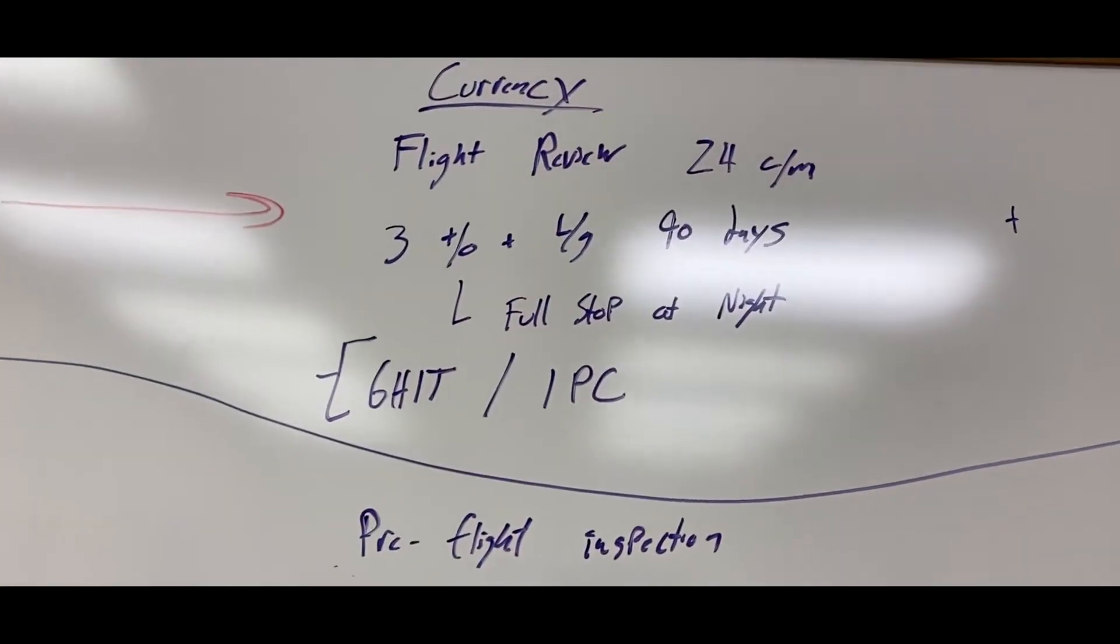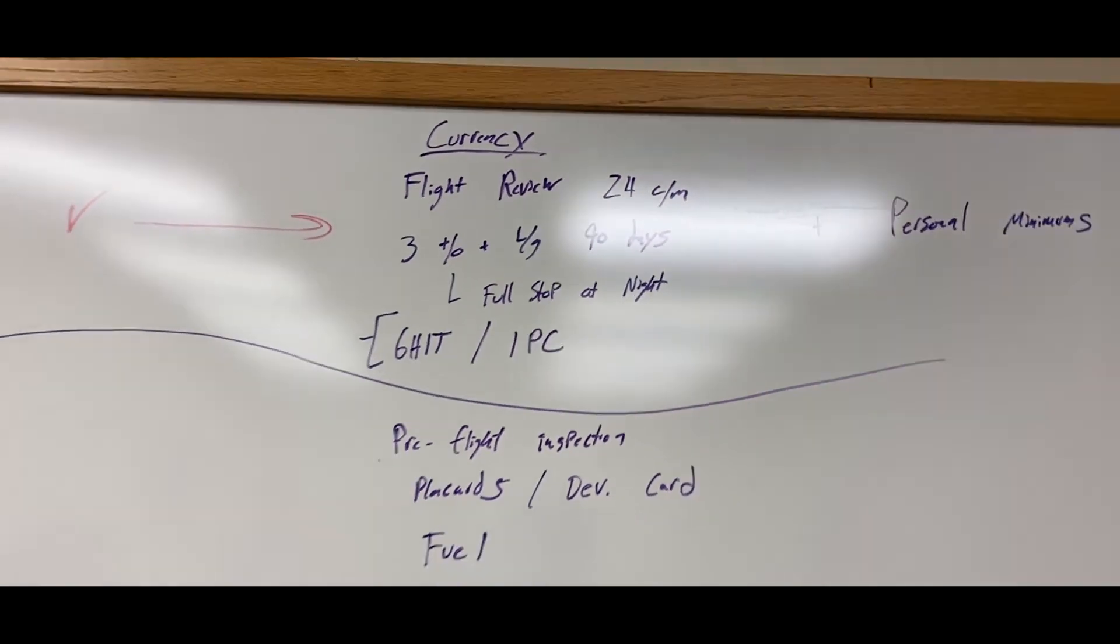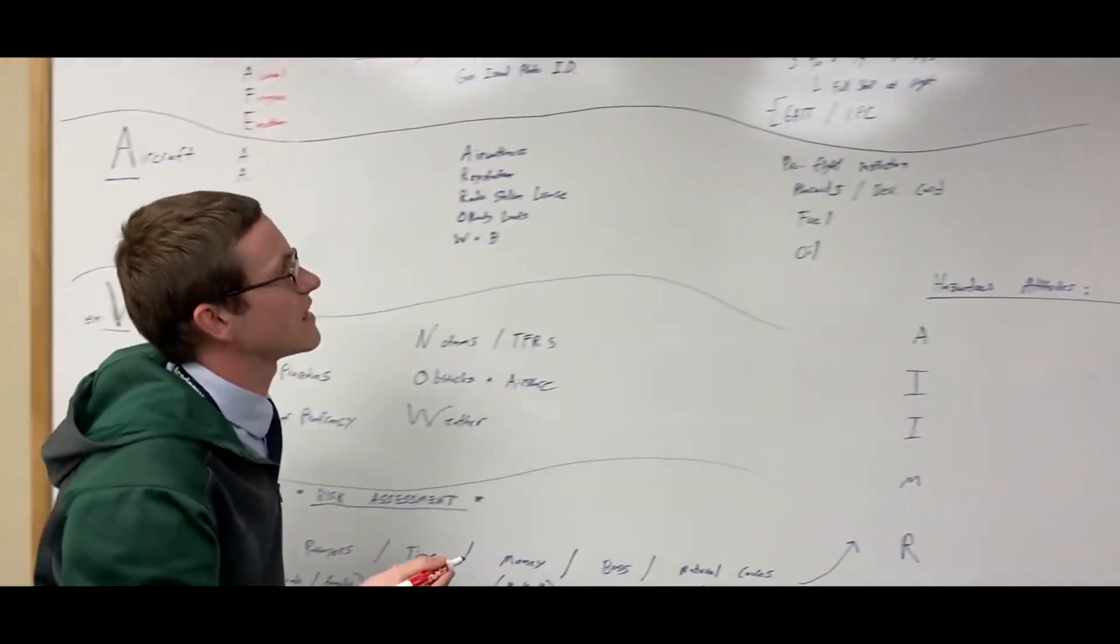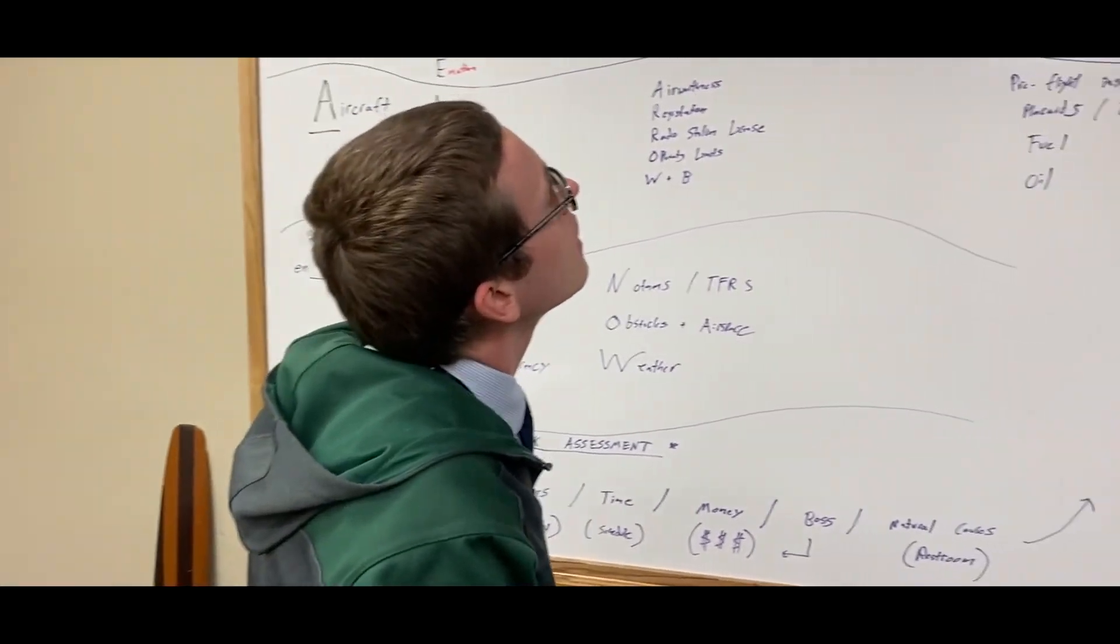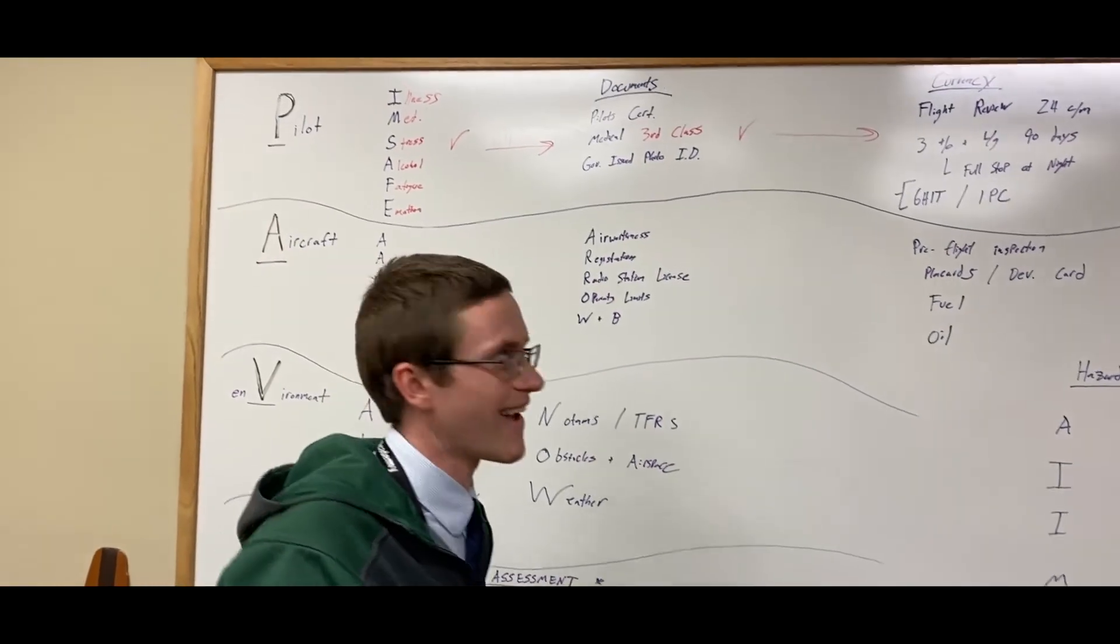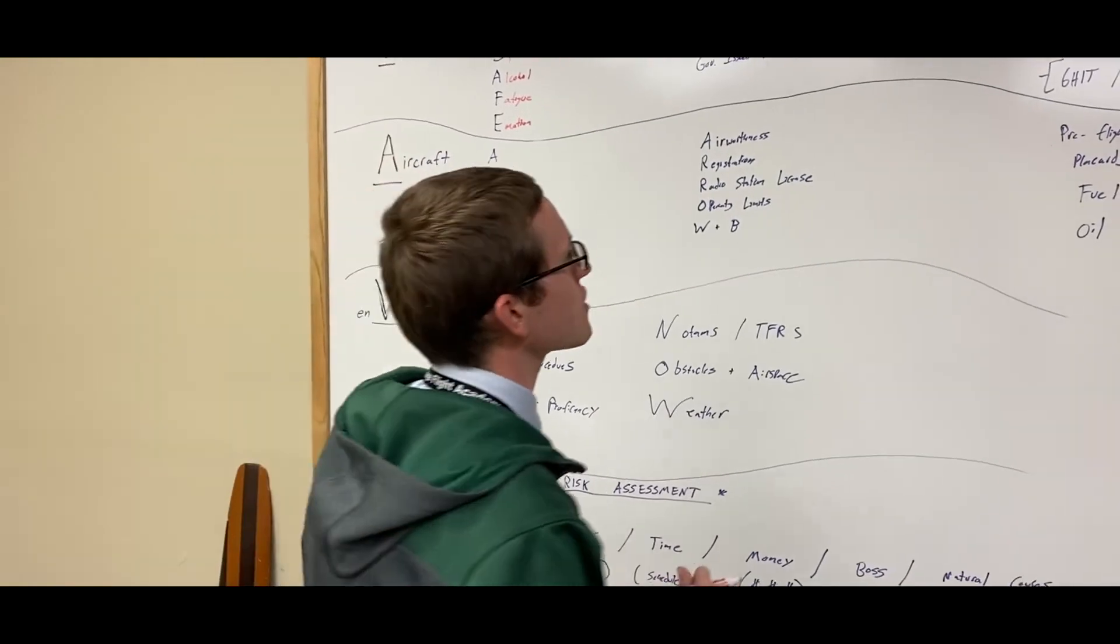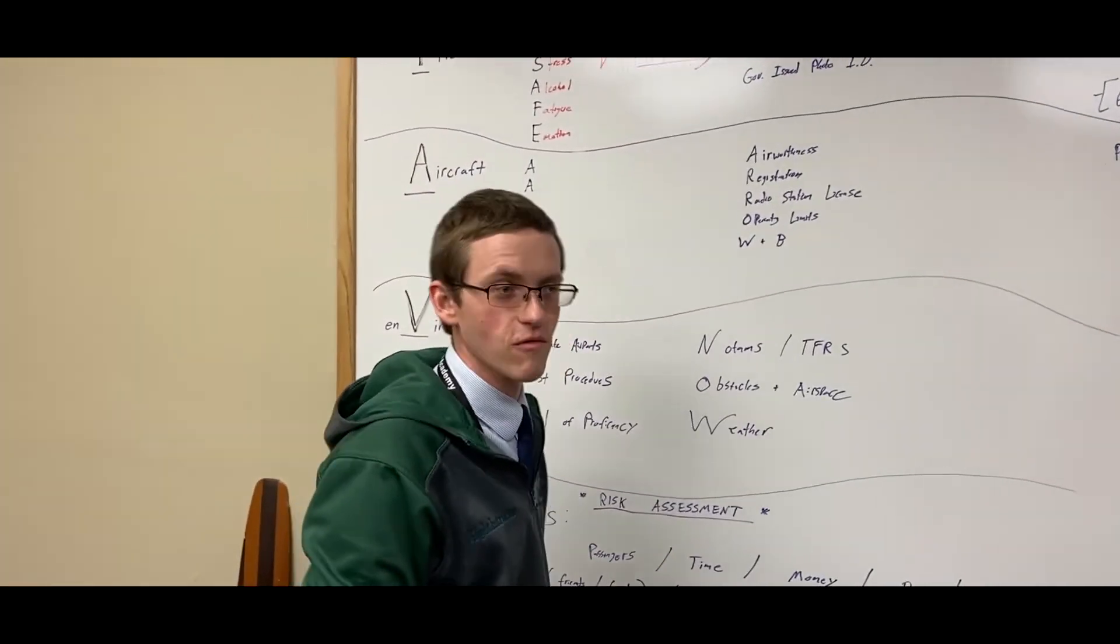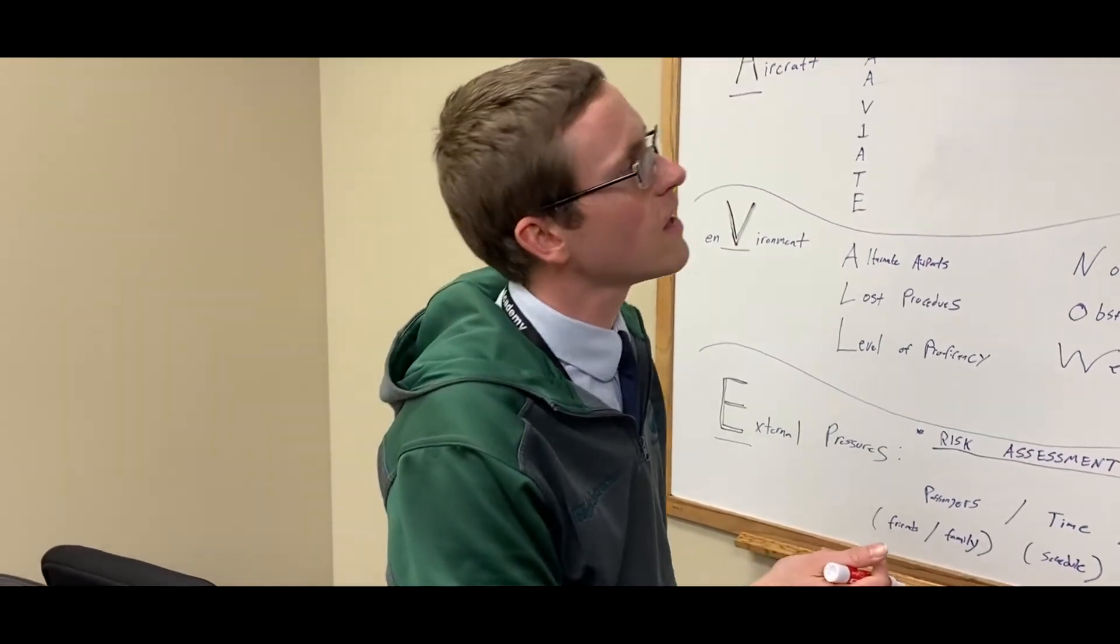Currency. Have you had a flight review in the last 24 calendar months? If you have, have you done three takeoffs and landings in the last 90 days in the same category class of aircraft? If you're flying at night, were those landings to a full stop and at night? If you're instrument rated and you're going into instrument conditions, have you done your six hit currency? Or do you need an IPC? Where are you with that? When's the last time you shot an approach? Check your logbook.